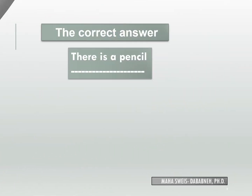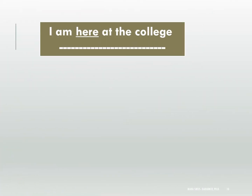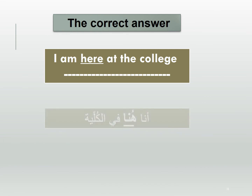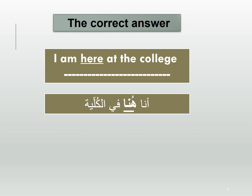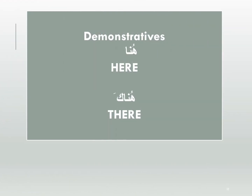Now, the word Huna means 'here.' For example: I am here at the college. I am here in the community. Later on, I will introduce more demonstrative words.